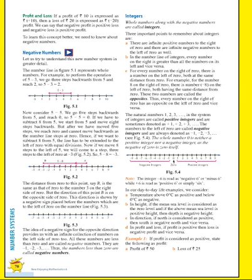Whole numbers along with the negative numbers are called integers. For this, three important points are to be remembered. First: integers have infinite positive numbers to the right of zero, and infinite negative numbers to the left of zero.